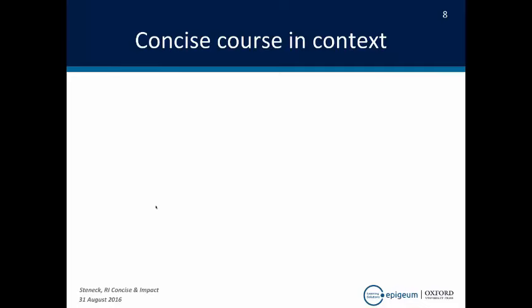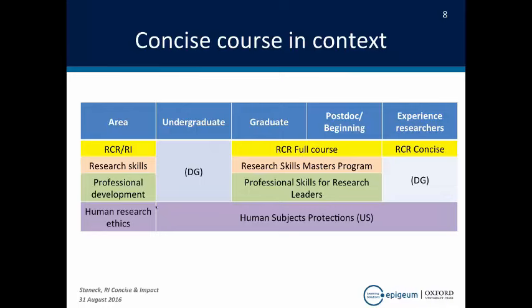Putting the concise course into context: we're basically moving from undergraduate to graduate to postdoc, and then to beginning and experienced researchers. The full RCR course is designed largely for graduate students and postdocs. The concise course is up there for experienced researchers. There are new development groups for undergraduates and experienced researchers in process. That's where the concise course fits into where we're going right now.